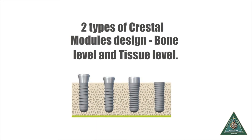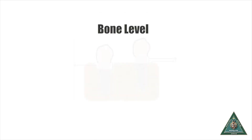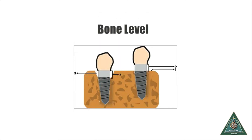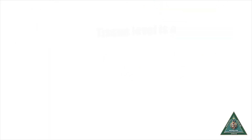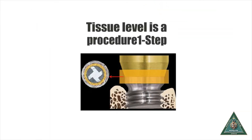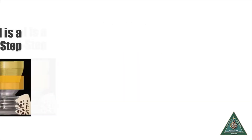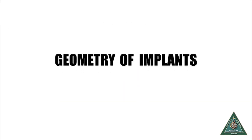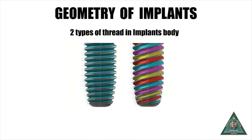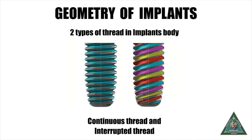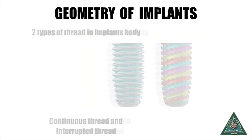Crestal modules are designed at two levels: bone level and tissue level. In anterior teeth, bone level is used as it is less visible and more aesthetic. Tissue level implants, on the other hand, are easier to maintain and require only one surgical procedure, and hence they are used in posterior teeth.